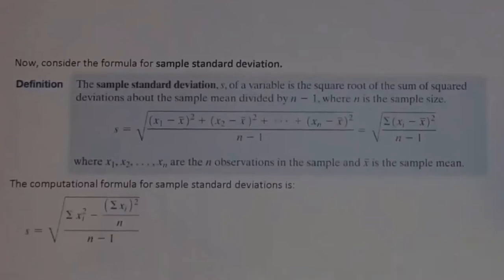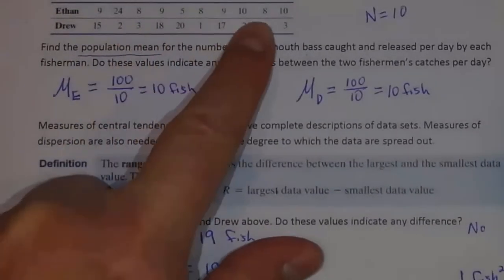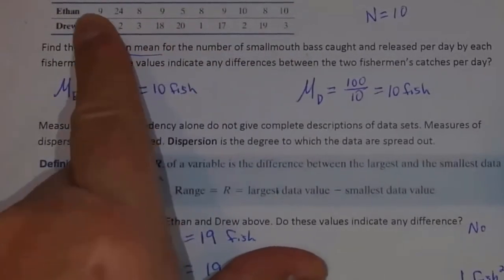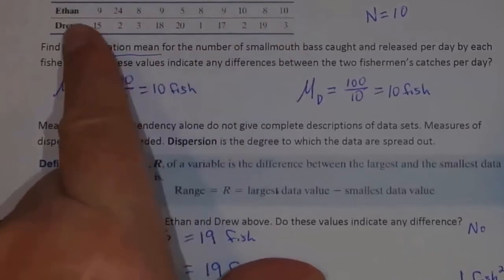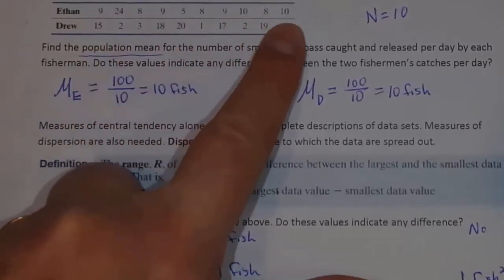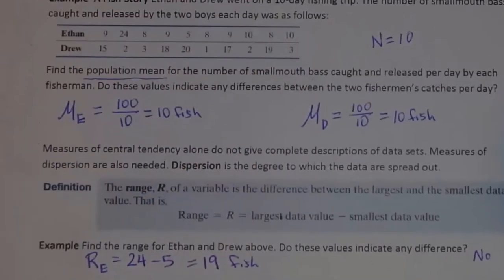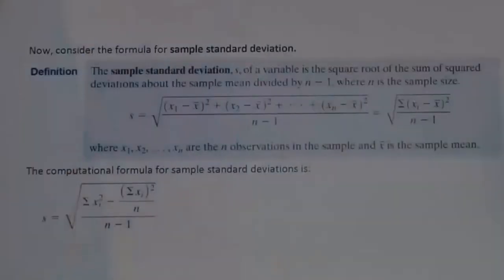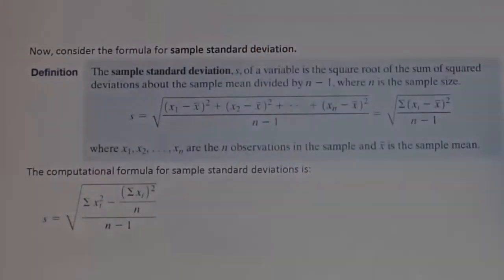What if we have a sample of data instead of a population of data? For Ethan and Drew's problem, we considered this a population of data because they went on a 10-day fishing trip, and this was the data from all 10 days. So this was a population as opposed to a sample. So what we calculated when we calculated sigma is a parameter.